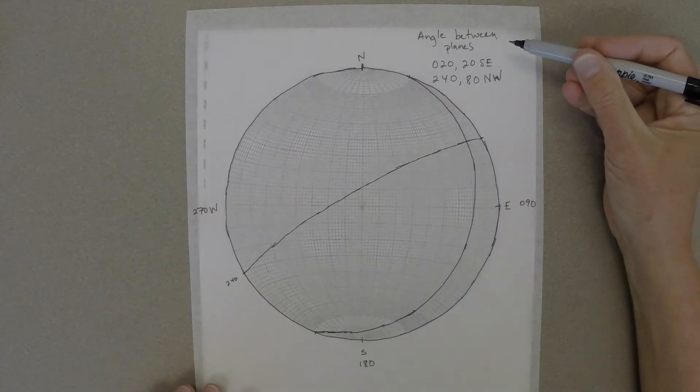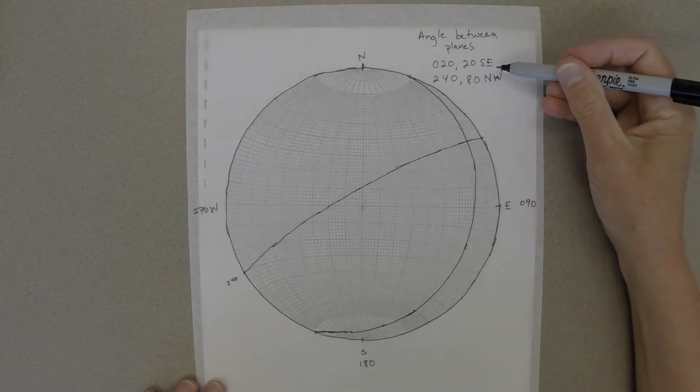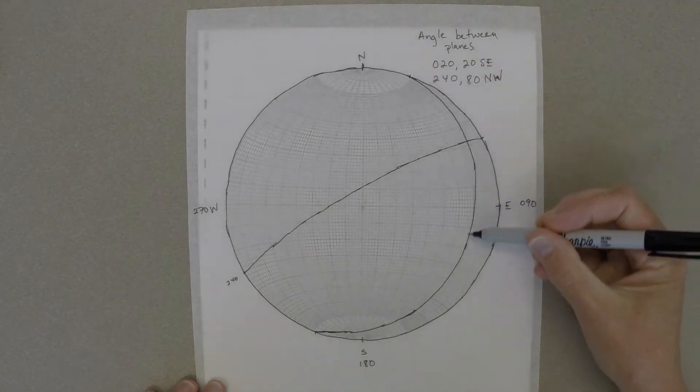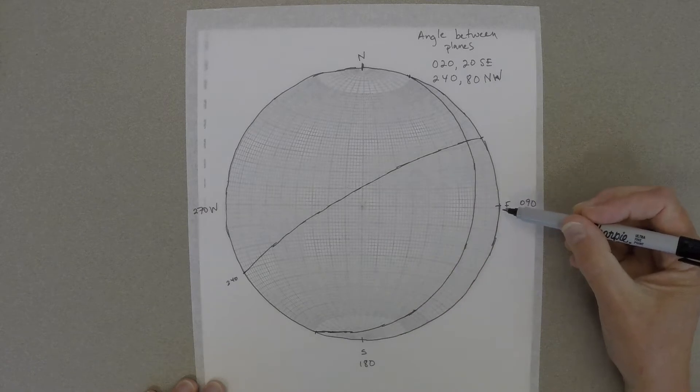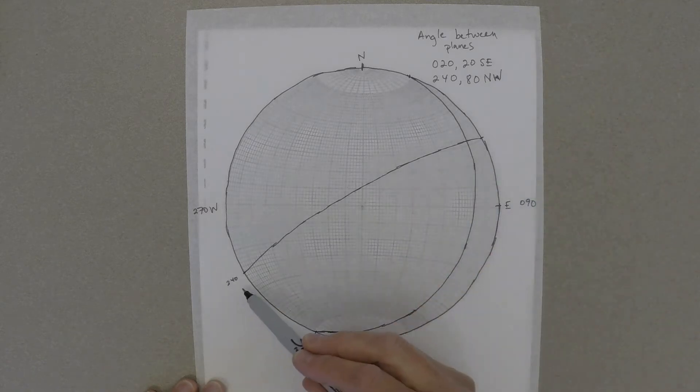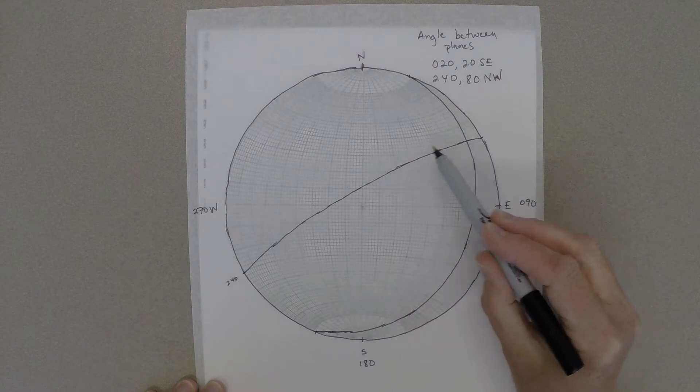To start with, we want both of our planes plotted already. In this case, our first plane has a strike of 20 degrees and dips 20 to the southeast, and our second plane has a strike of 240 degrees and dips 80 to the northwest.